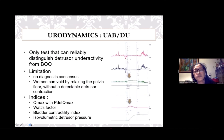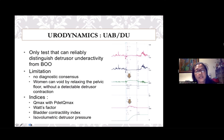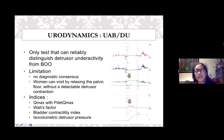For women presenting with voiding dysfunction or obstructive lower urinary tract symptoms, urodynamics is the only test that can reliably distinguish detrusor underactivity from bladder outlet obstruction. One must remember that some normal women can void perfectly well without raising detrusor pressure — just by relaxing the sphincter and pelvic floor muscles. Hence, different indices have been used to increase the accuracy of urodynamics for the underactive bladder.